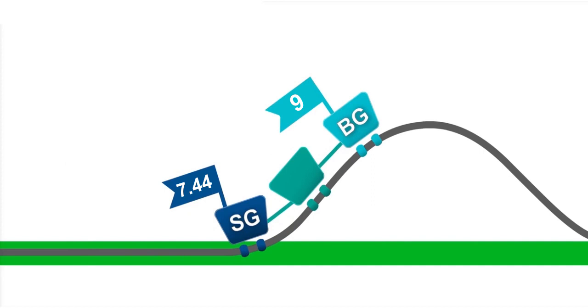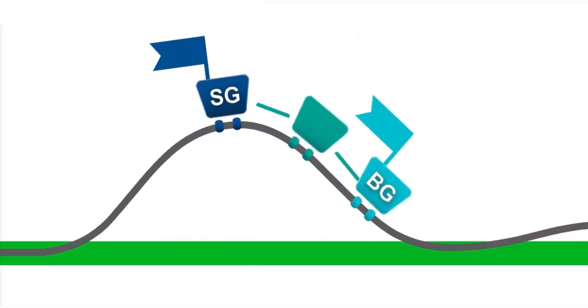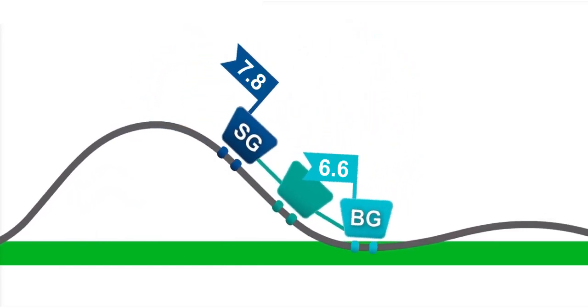Now as the cars head down the hill, or as glucose is decreasing or trending down, once again the BG is in the front car.